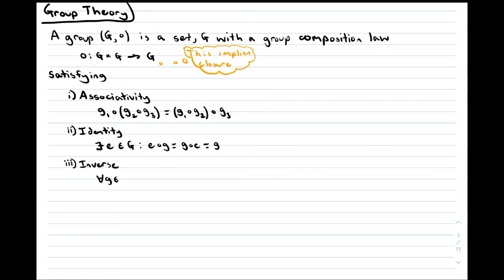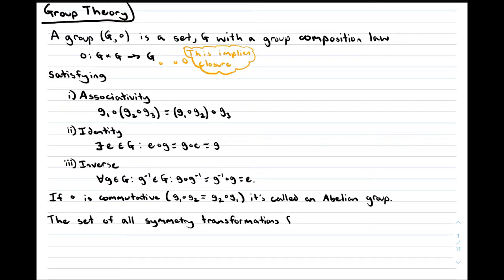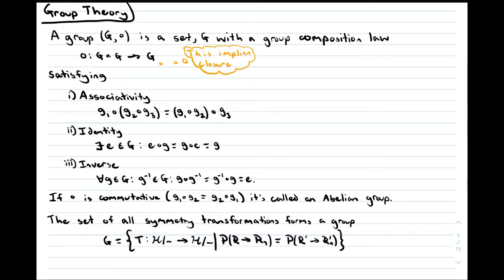Finally, Inverse: for every element of the group, there is an inverse element which is also a member of the group. Combining an element with its inverse always gives the identity. Now, if the group composition law is commutative — meaning G1 combined with G2 equals G2 combined with G1, which is different from associativity in that the order of elements is reversed — then it's called an abelian group. The set of all symmetry transformations on a physical system will always form a group, where the group composition law is successive transformations.